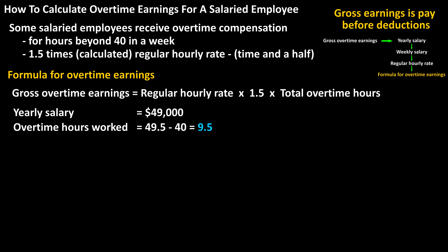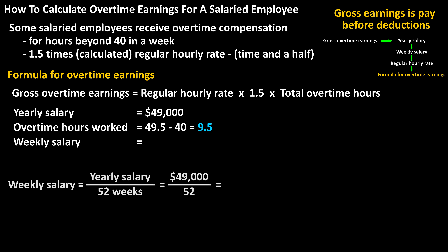We first need to calculate their weekly salary. To do this, we divide the yearly salary of $49,000 by the number of weeks in a year, which is 52. So $49,000 divided by 52 equals $942.31 rounded off.